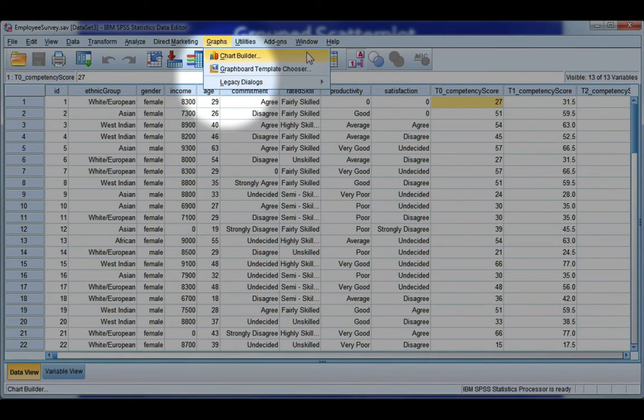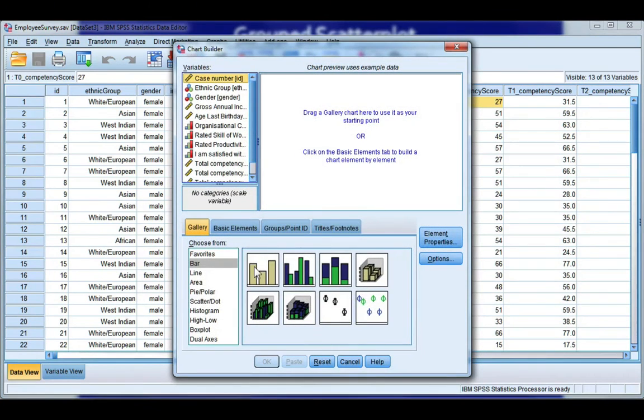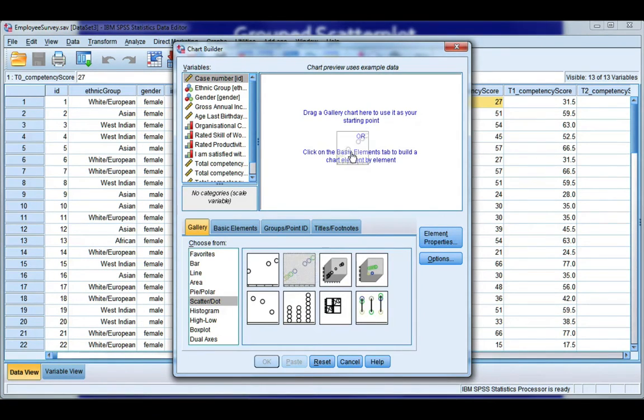If we go to graphs and chart builder, we want a scatter dot, and we're going to choose the second option. So double click or drag it into your gallery.